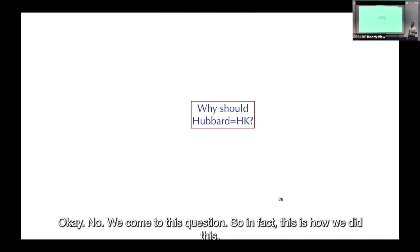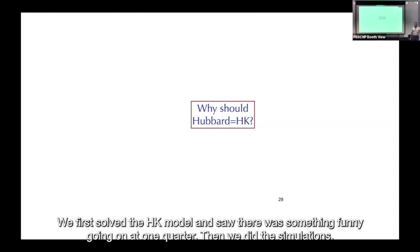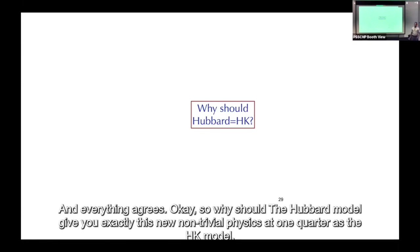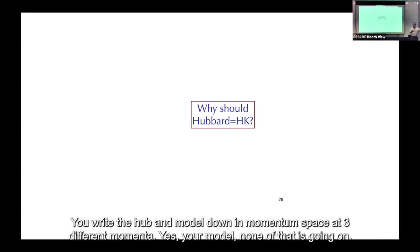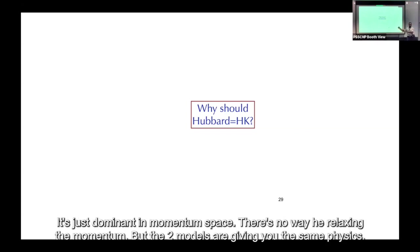This is how we did this: we first solved the HK model and saw something interesting at one quarter, then did the simulations and everything agrees. Why does Hubbard give exactly this same non-trivial physics at one quarter as the HK model? Hubbard has mixing between all different momenta; HK is just diagonal in momentum space. Yet the two models give the same physics. Why?